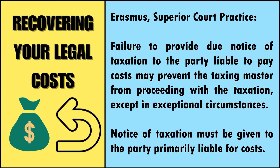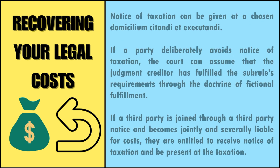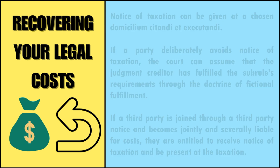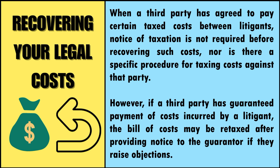Notice of taxation must be given to the party primarily liable for costs, and can be given at a chosen domicilium citandi et executandi. If a party deliberately avoids notice of taxation, the court can assume that the judgment creditor has fulfilled the sub-rule's requirements through the Doctrine of Fictional Fulfillment. If a third party is joined through a third party notice and becomes jointly and severally liable for costs, they are entitled to receive notice of the taxation and be present. When a third party has agreed to pay certain tax costs between litigants, notice of taxation is not required before recovering such costs, nor is there a specific procedure for taxing costs against that party. However, if a third party has guaranteed payment of costs incurred by a litigant, the bill of costs may be retaxed after providing notice to the guarantor if they raise objections.